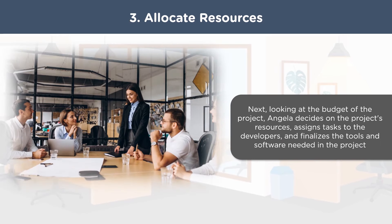Once Angela has an in-depth understanding of Rob's project and gathers all the necessary requirements, she starts allocating resources while keeping the project budget in mind. She recognizes and allocates tasks and resources to the development team. BAs work closely with the development team to design the solution. Angela ensures the development team doesn't spend their time re-understanding Rob's requirements, and together they finalize the software and tools required to build the project.